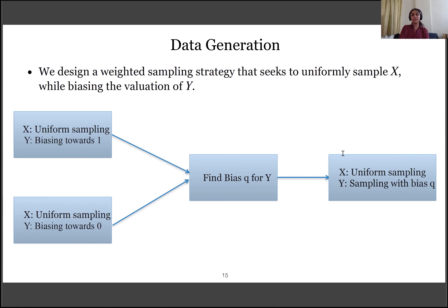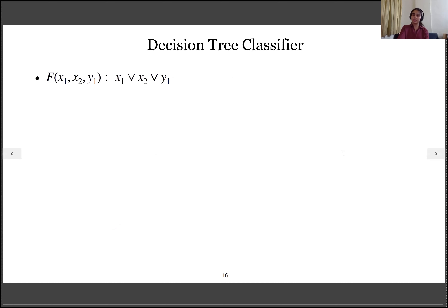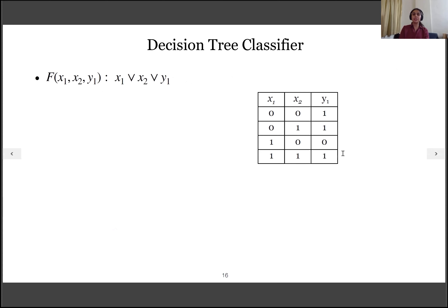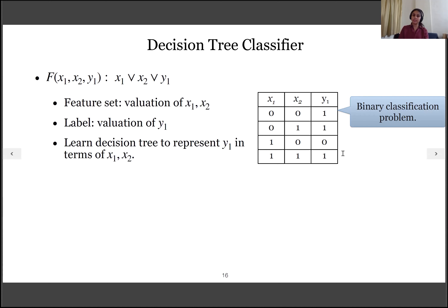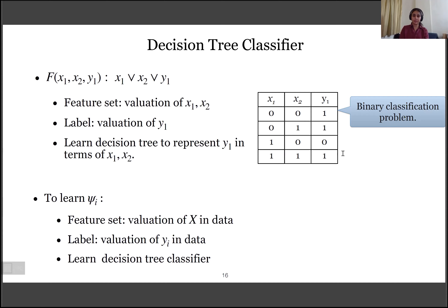Once we have the data, the next step is to learn the candidate function. Consider the specification and assume the data is generated. Looking at the valuation of y1, we can treat this as a binary classification problem — considering valuations of x1 and x2 as the feature set and the valuation of y1 as the label. We learn a decision tree classifier with this feature set and label to learn y1 in terms of input variables x1 and x2. To generalize: to learn a candidate function ψi for output variable yi, we use valuations of x as features and valuations of yi as the label, and train a decision tree classifier.